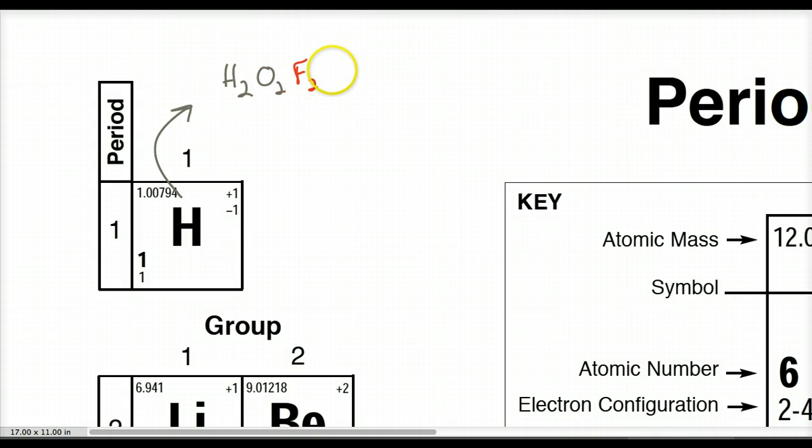Fluorine loves to bond with itself, bromide loves to bond with itself, iodine, nitrogen, and chlorine. And collectively, I call these the Hoffbrinkels. Sometimes you can remember just H-O-F-B-R-I-N-C-L, the Hoffbrinkels.